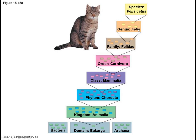Through the taxonomic tree, we can see that the family Felis belongs to is Felidae — including not just domestic cats but also wild cats. The order Felidae belongs to is Carnivora, which certainly includes more than cats. The class is Mammalia, so they are mammals. The phylum is Chordata, meaning they are vertebrates. The kingdom is Animalia because they are animals. And the domain is Eukarya because their cells do have nuclei.